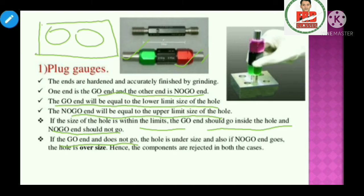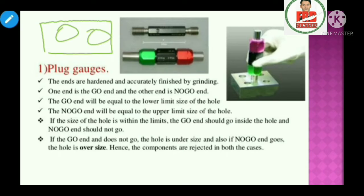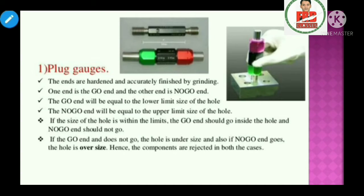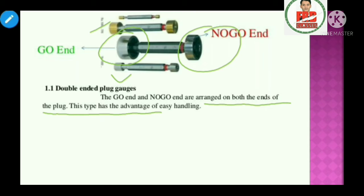If the go end does not go, the hole is undersized. If the no-go end goes, the hole is oversized. In both cases the components are rejected. This is the advantage of easy handling.